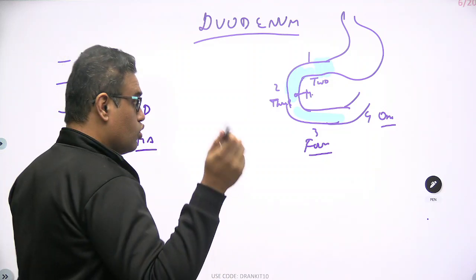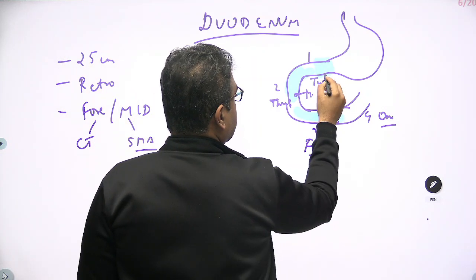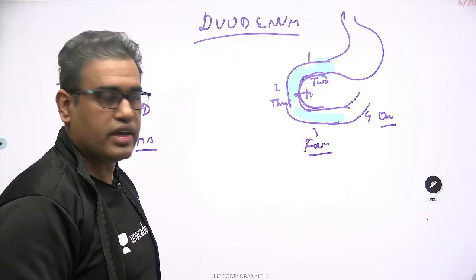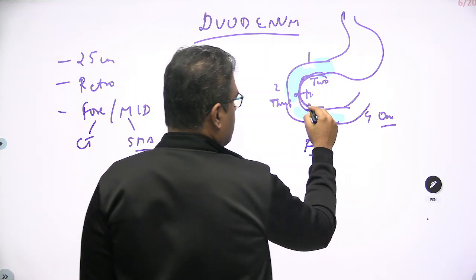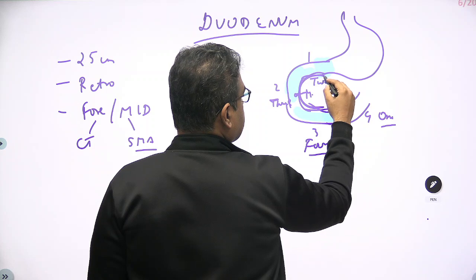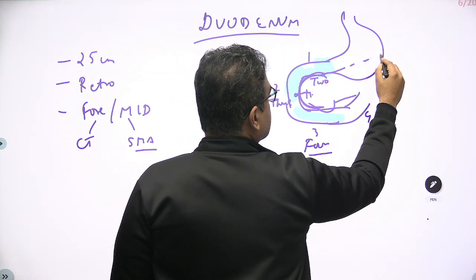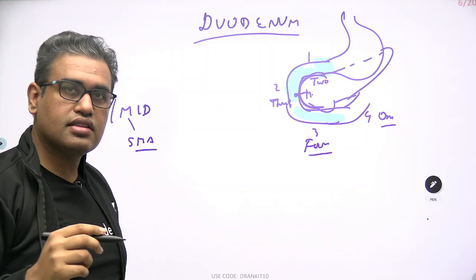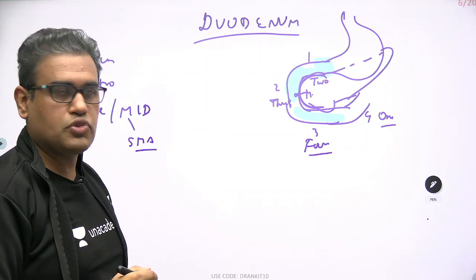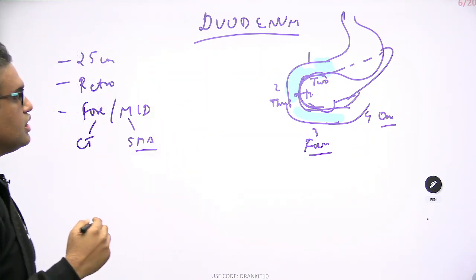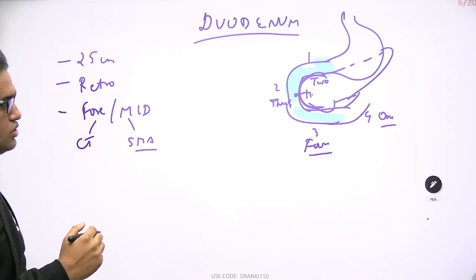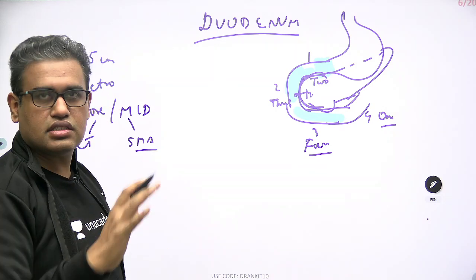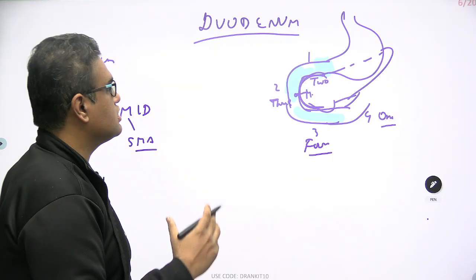Another structure closely related to the duodenum is the pancreas, which lies in the concavity of the duodenum. The head of the pancreas with the uncinate process lies here, and the pancreas then goes behind the stomach. Since the duodenum is retroperitoneal, it is not a mobile structure — it is a fixed structure, seen on the posterior aspect.